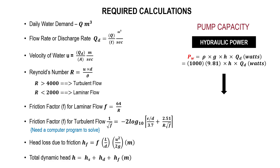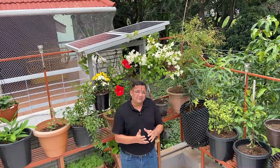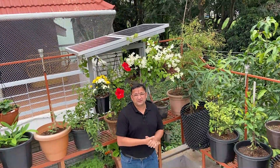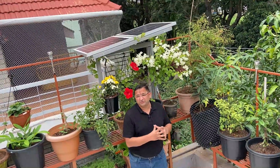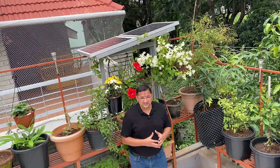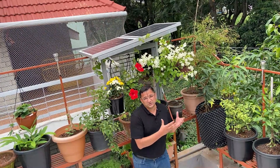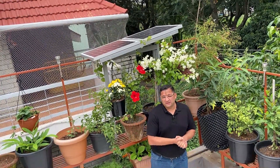This is slightly complicated — determining the friction factor is a very complicated exercise and one needs to use a computer program. The simpler method is to just look at the pump datasheet, which gives the flow rate for a given head. Using that specification we can directly determine the pump capacity.